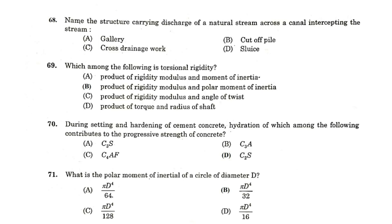Name the structure carrying discharge of natural stream across a canal intercepting the stream. Cross drainage work. Which among the following is torsional rigidity? The product of rigidity modulus and polar moment of inertia. During setting and hardening of cement concrete, hydration of which among the following contributes to the progressive strength of the concrete. C2S. What is the polar moment of inertia of a circle of diameter d? Pi by 32 into d raised to 4.